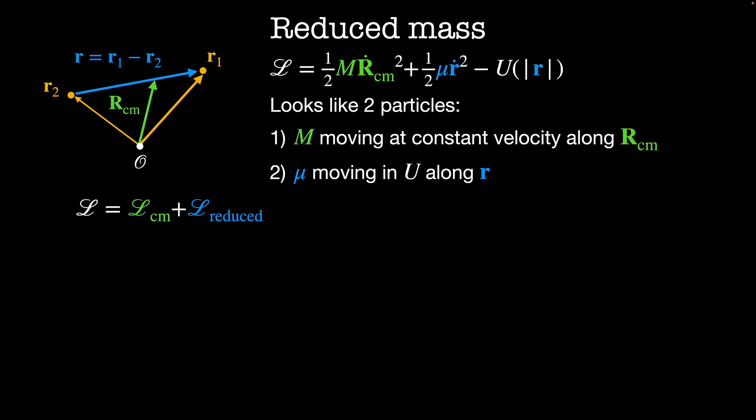Our Lagrangian is just the Lagrangian for the center of mass plus the reduced Lagrangian. We call it the reduced Lagrangian because μ is the reduced mass. The Euler-Lagrange equation for Lcm is trivial. dLcm by dRcm is equal to zero, which implies that dL by dRcm dot is equal to some constant. This means that Rcm is an ignorable coordinate and we don't need to consider it in any of our further calculations.